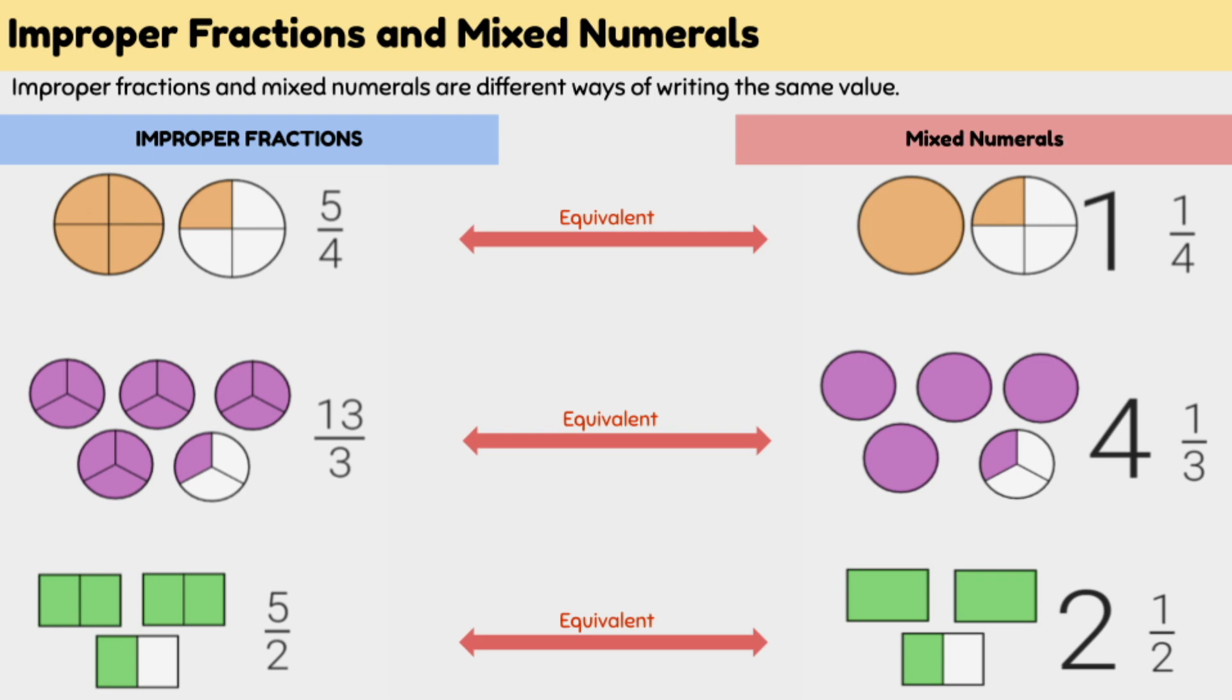An easy way of converting between simple improper fractions and mixed numerals is to draw their pictures. When we have the pictures, we can easily see how many parts we have in total and how many wholes.